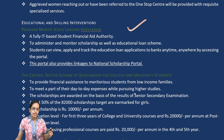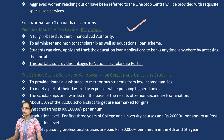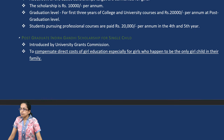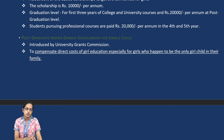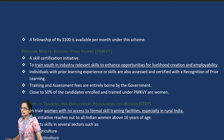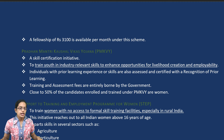The central sector scheme for scholarships for women and university students allows meritorious low-income family students to receive a scholarship of nearly Rs. 10,000 per year. The Postgraduate Indira Gandhi Scholarship for the Single Girl Child compensates the direct costs of girl education for families with only one girl child.